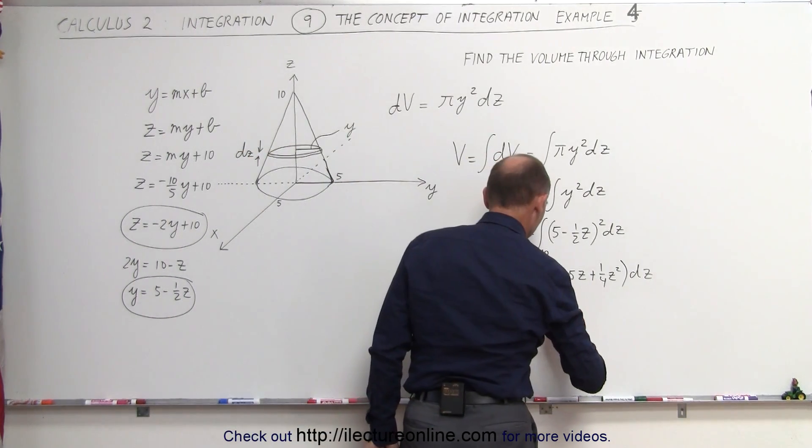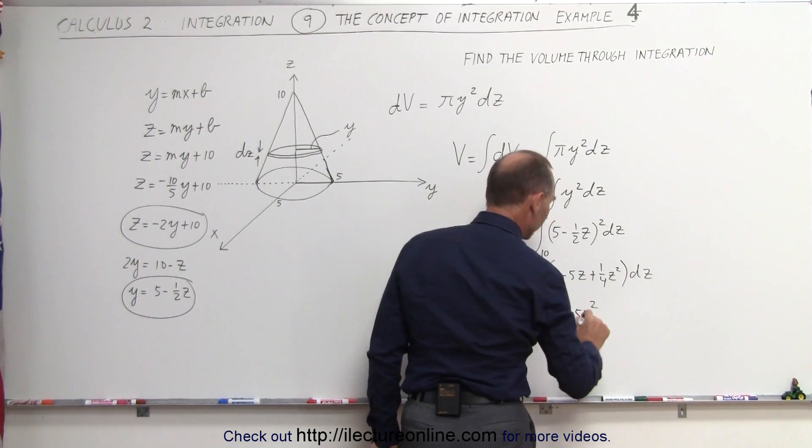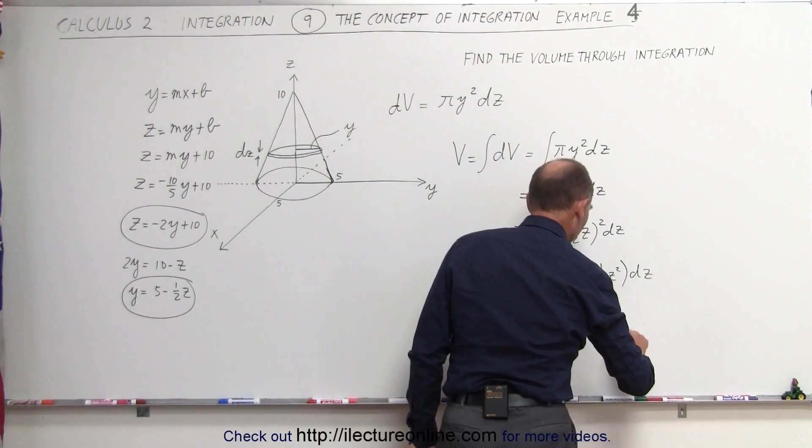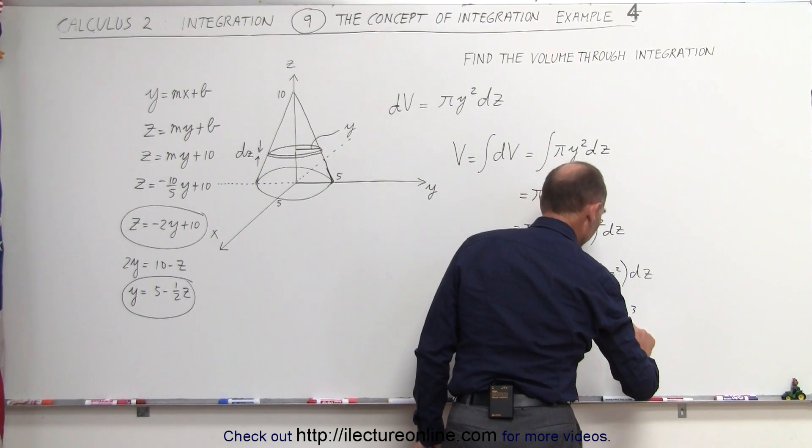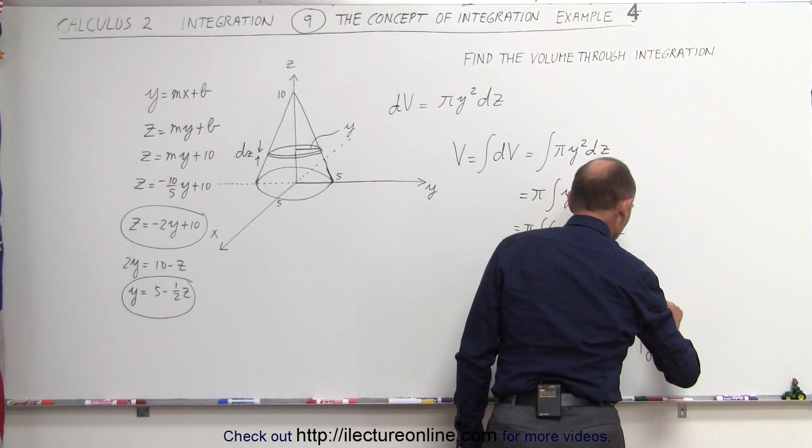So when we integrate this, we get 25z minus 5z, add 1 to the exponent divided by the new exponent, plus 1 quarter z, add 1 to the exponent divided by the new exponent, and evaluate it from 0 to 10.